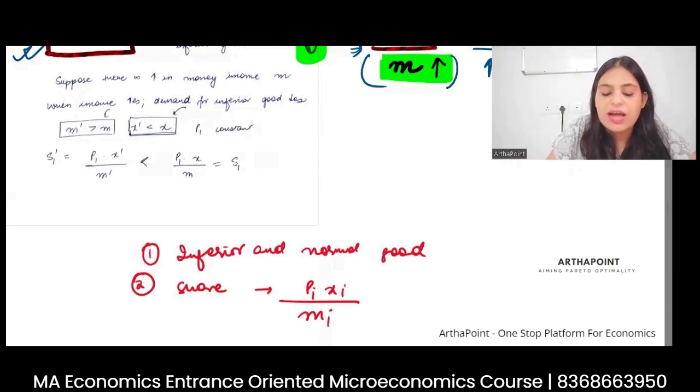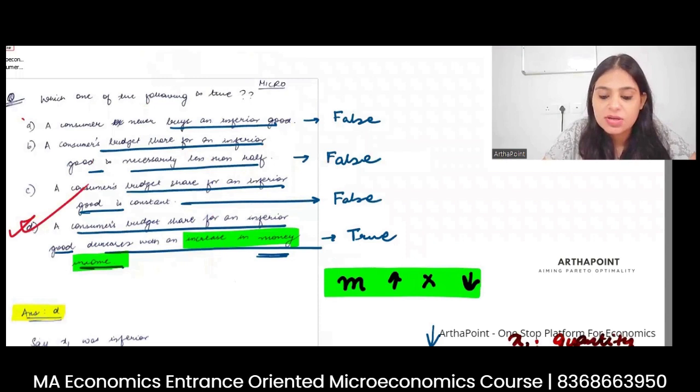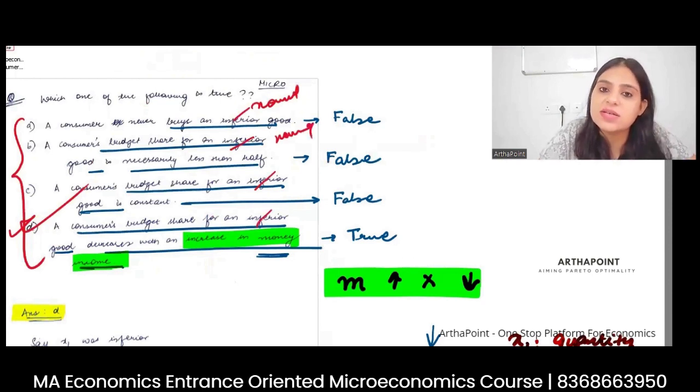Third, I want you to look at these four statements. But now everywhere instead of inferior, just take normal and check the answers. Just take everywhere normal. That is a question for you to try.